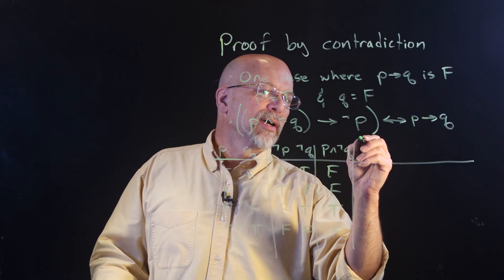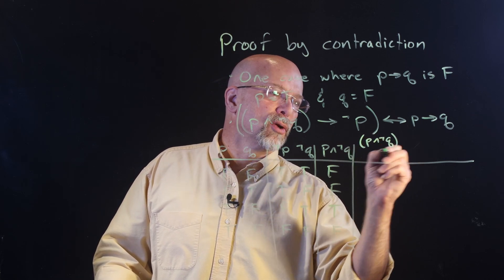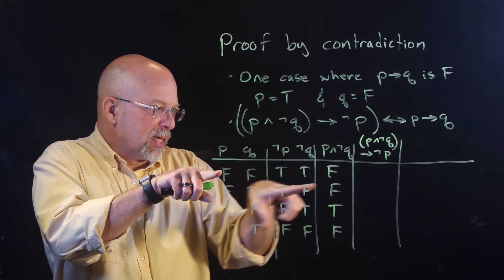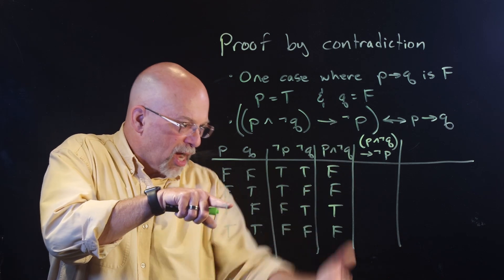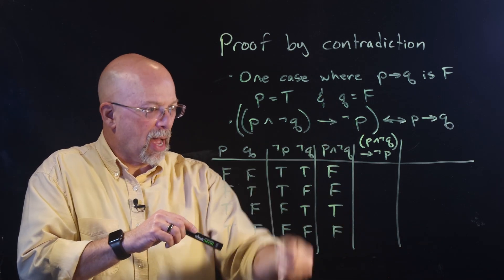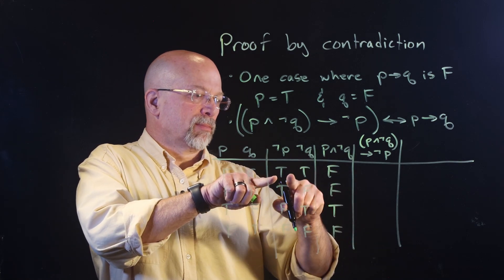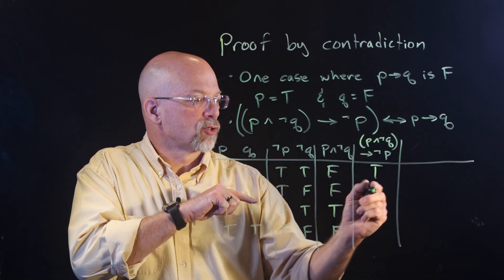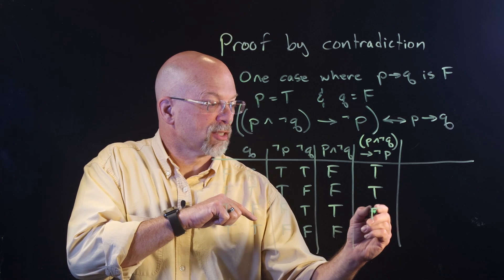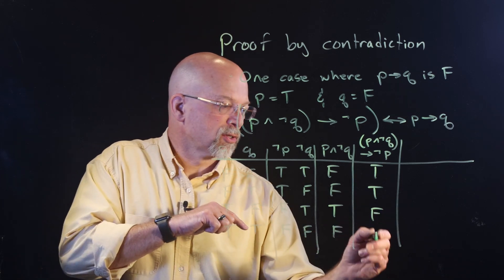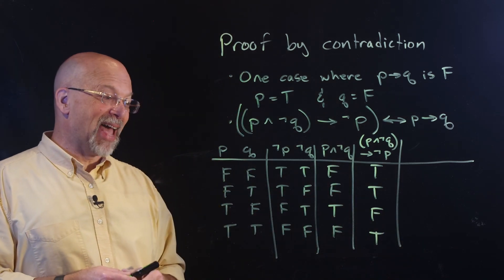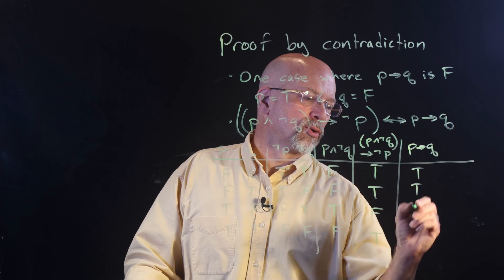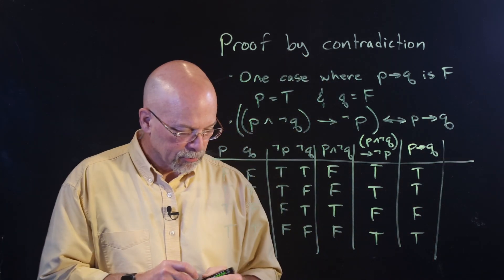What we get is the same column as P implies Q: true, true, false, true. We'll call this column R and this column S. In the last column we have R if and only if S. If-and-only-if just looks for equality: true equals true — true; true equals true — true; false equals false — true; true equals true — true.